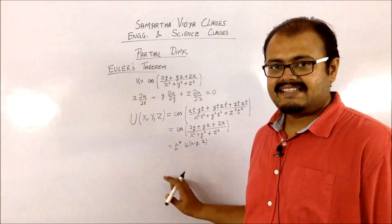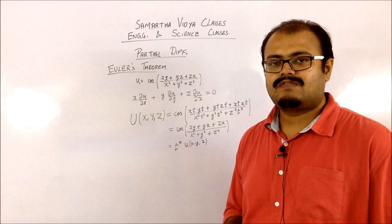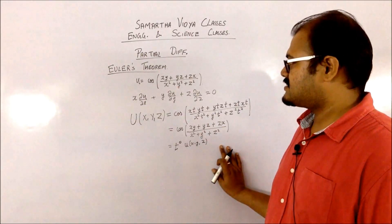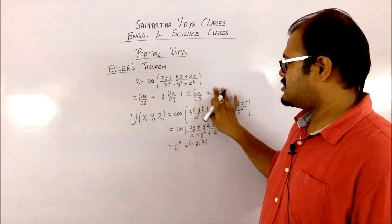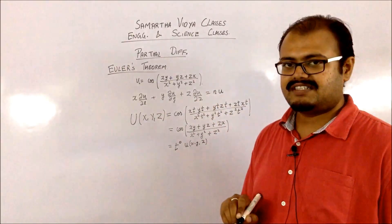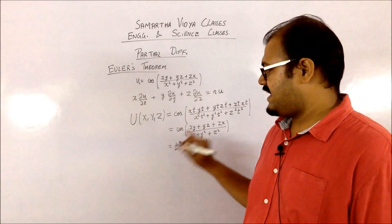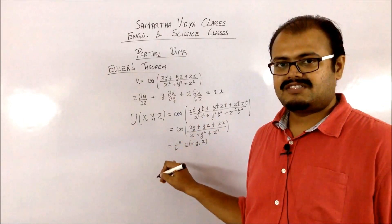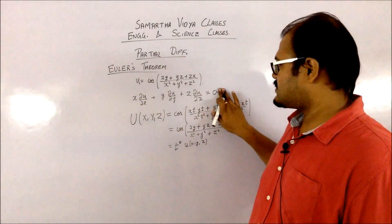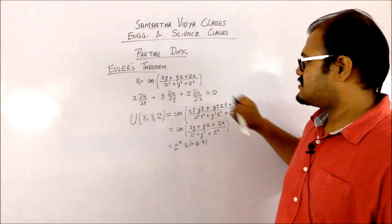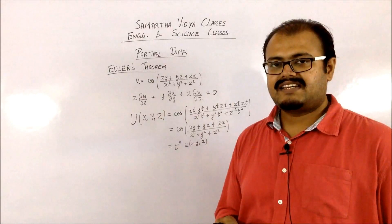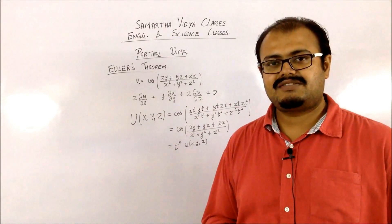Since the function is homogeneous, you can apply Euler's theorem. According to Euler's theorem, x·(∂u/∂x) + y·(∂u/∂y) + z·(∂u/∂z) equals n·u. But in this case, n is the degree of the homogeneous function, which is 0. So you get u·0, which is 0. You are getting the proof directly. Euler's theorem is quite easy — you just have to check whether the function is homogeneous or not.